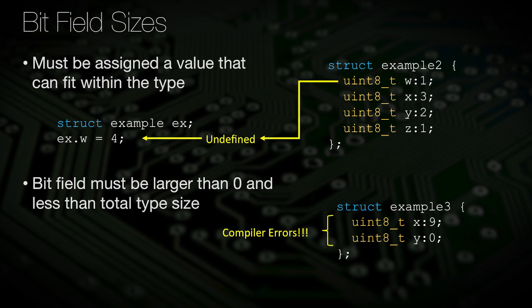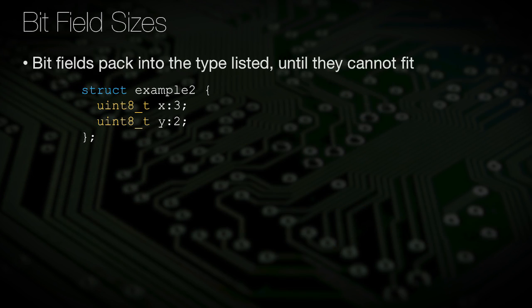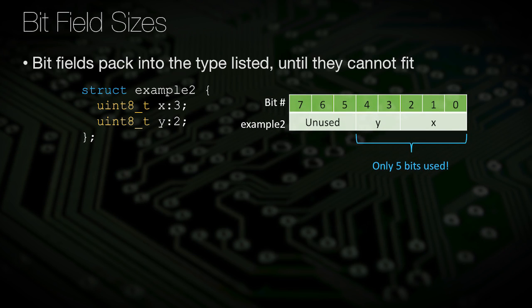Additionally, you will get a compiler error if you define a bitfield to be of size 0. If two successive bitfields are defined as the same type and they do not overflow the initial type they are being declared with, they will be put in the same grouping. Meaning, a bitfield of 3 and 2 bit widths within a uint8 type will only need that one byte to store those data bits, or a total of 5 bits.